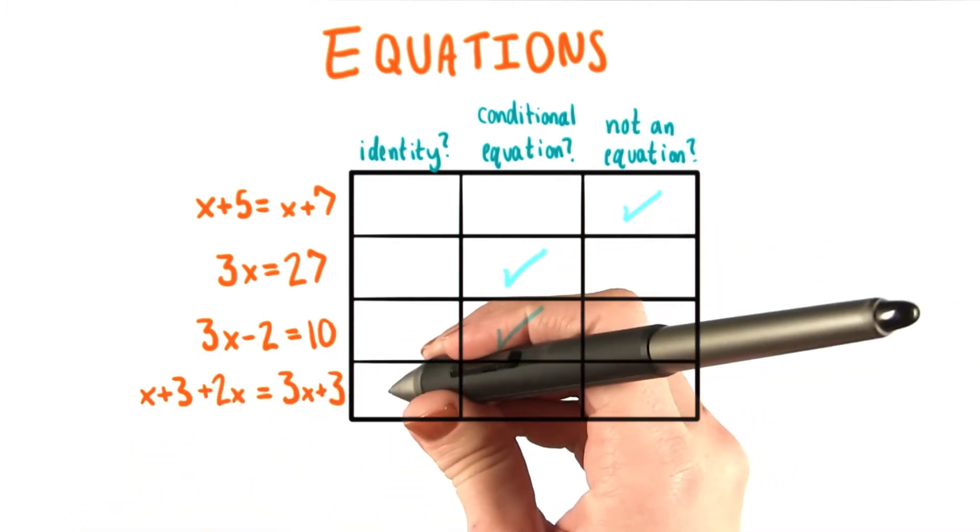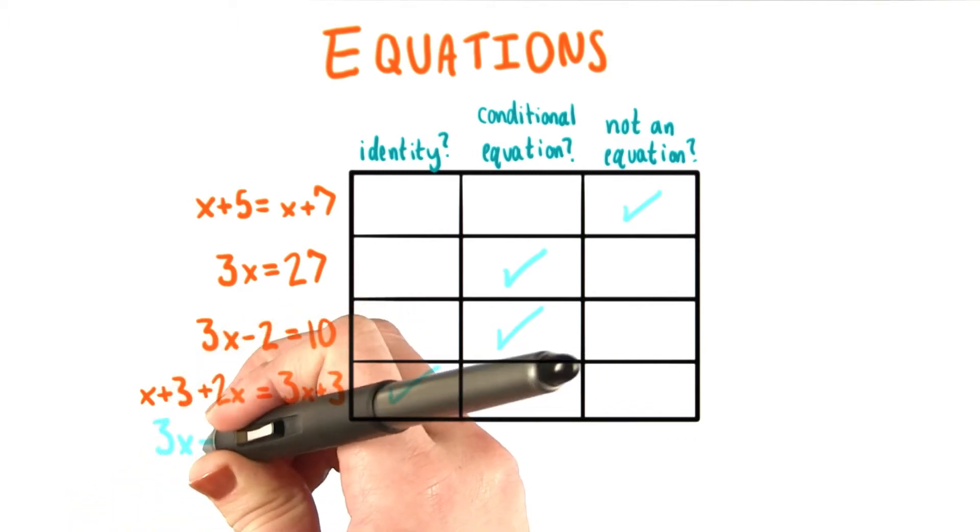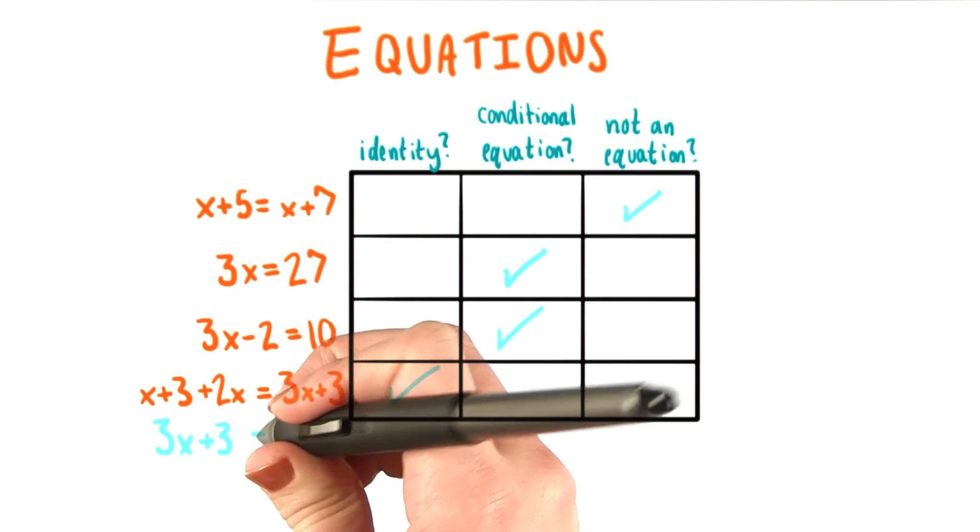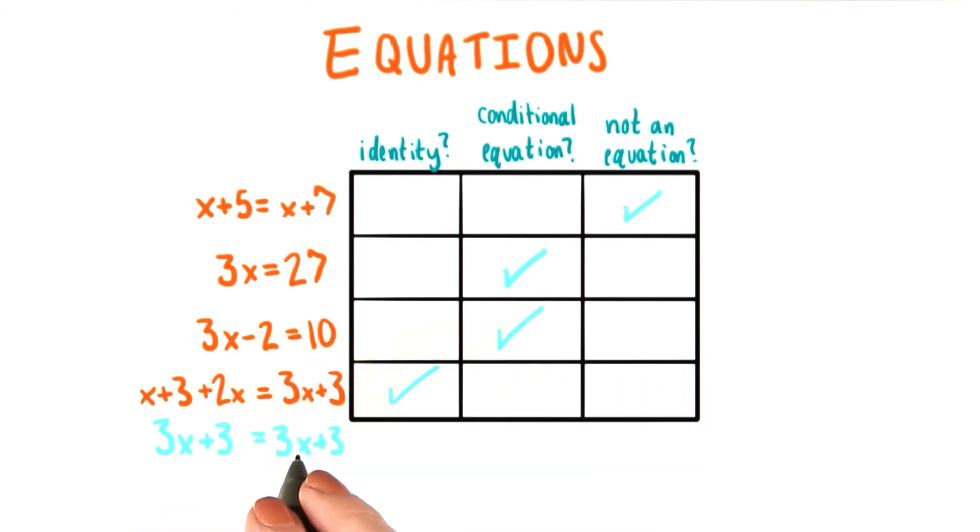And our last equation is an identity. If we simplify the expression on the left hand side, we can combine like terms, since x and 2x are like terms. We can make the left hand side equal to 3x+3, which is exactly the same as the right hand side. No matter what we plug in for x, these two will be equal. So this is an identity.